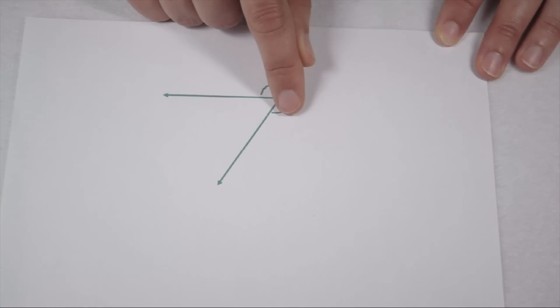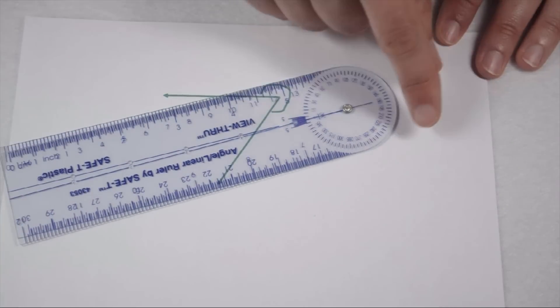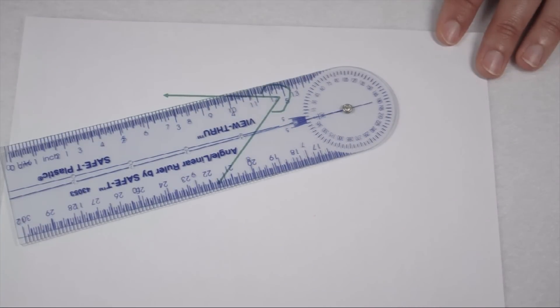Looking at this angle, we can tell by the way it's labeled that it's a reflex angle. This means it's going to be between 180 and 360 degrees. An advantage to using an angle ruler is that it measures all the way up to 360 degrees.